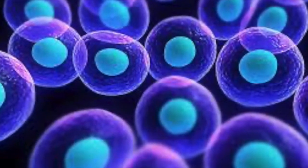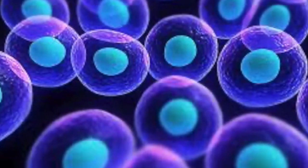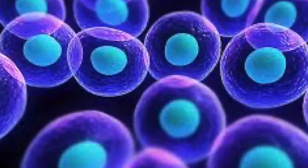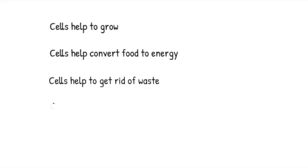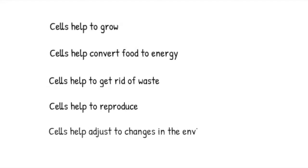Every living thing has millions of tiny things inside it that help them grow. These are called cells. Cells not only help living things to grow, but perform many other tasks such as converting food to energy, helping to get rid of waste, helping to reproduce, and helping to adjust to changes in the environment. Now let's look at animal cells and plant cells.